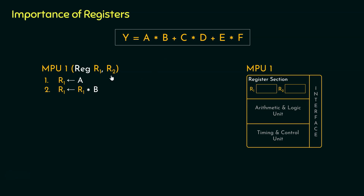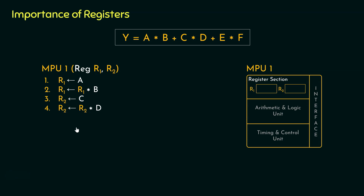We have another register R2, and after A×B, we need to perform C×D. Therefore, within R2, let's load the operand C. Following this, we will compute C×D and store it within R2. R2 before this operation was holding C, and by the end of this operation, within R2 we will have C×D. Now notice: within R1 we have got A×B, and within R2 we have got C×D.